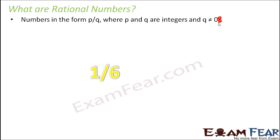1 by 6, this is a rational number because you have numbers in the form p by q, where p and q are both integers. 1 is also an integer, 6 is also an integer. But when you look at this number, this is also a fraction because this is in the form of p by q and here it is not representing a complete number. It is not a whole number. It is one part of six parts. So that means it is also a fraction.